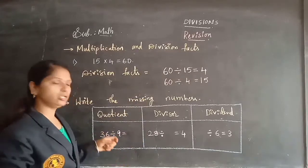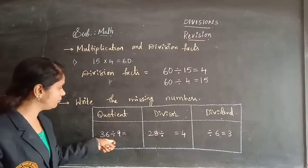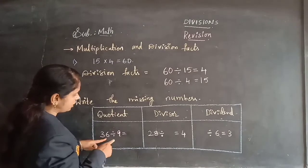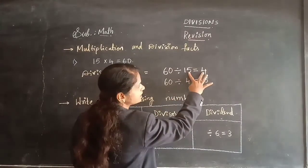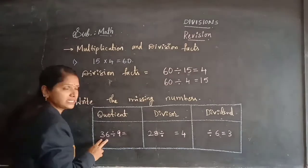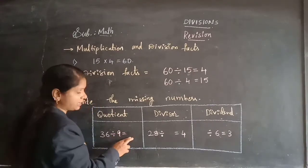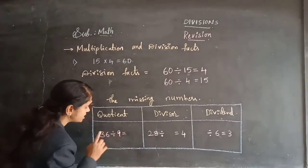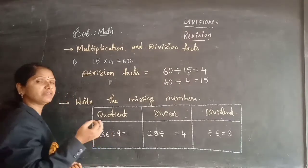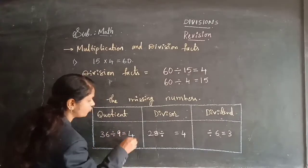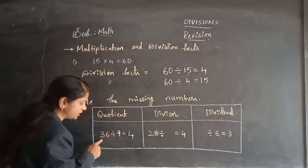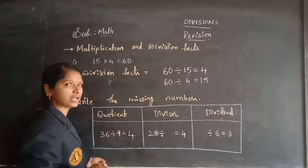Now write the missing numbers. We missed the quotient in this problem. You can write it using multiplication also — if you multiply these two you get this answer. Here 36 is dividing by 9, and we need to find the quotient. In the 9 table: 9×1=9, 9×2=18, 9×3=27, 9×4=36. We are getting 4 as the answer. So 4 is the quotient — meaning 9×4=36, or 36 divided by 9 gives 4 as quotient.